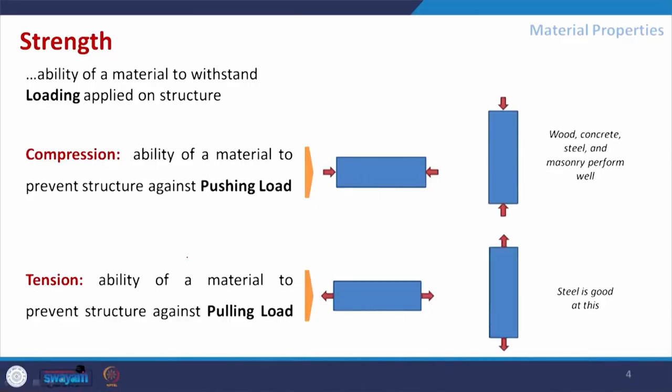Let us start with strength. This is basically the ability of a material to withstand loading applied on it. Strength of a material determines the ability to resist applied load — it may be tension, compression, bending, or torsion — the resistance against the applied load determines the strength of the material.